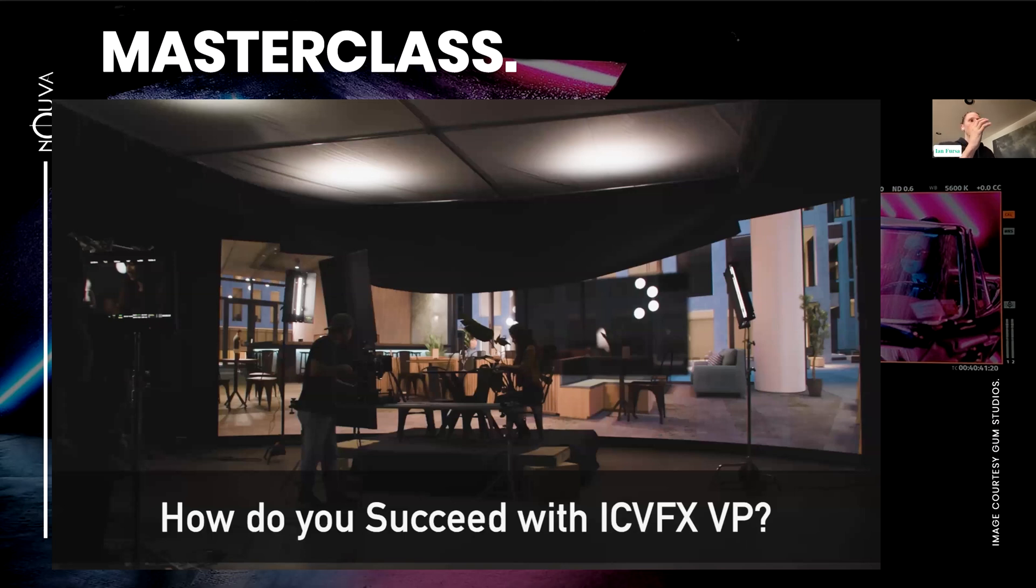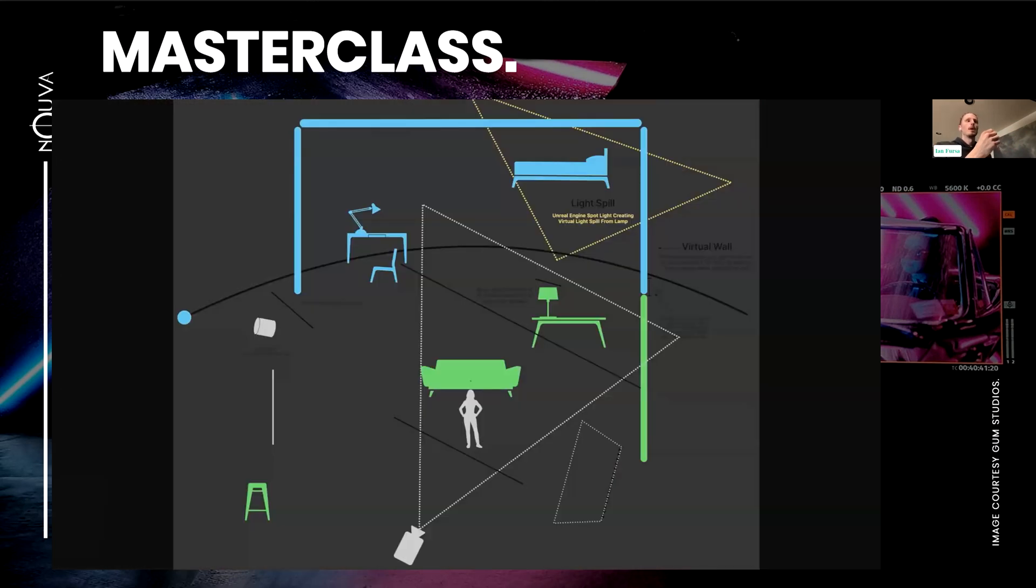So basically, how do you do a virtual production, in-camera VFX virtual production without doing it really bad? It definitely starts at pre-production. That's a huge thing with our VP Toolkit plugin and our pipeline - understanding what your physical and your virtual elements are doing with each other is very important. Then when you're on set, there's a couple rules that you kind of need to follow to get the best image.